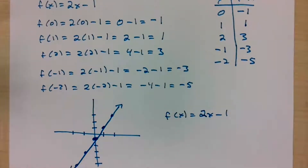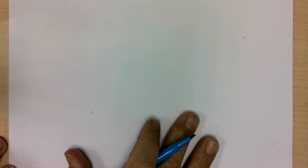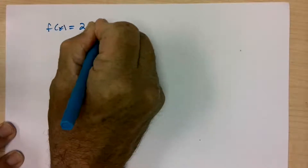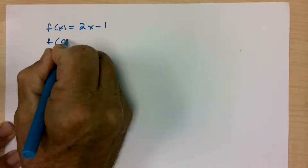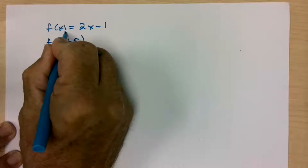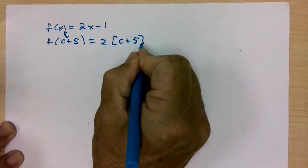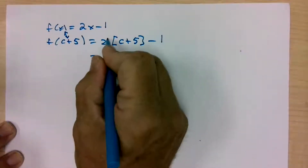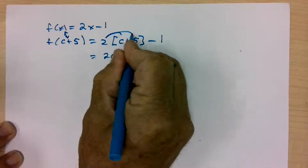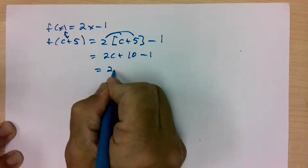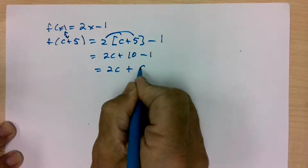You can plug other things into that function other than simply numbers. For example, with f of x equals 2x minus 1, if we want to know what f of c plus 5 is, we replace x with c plus 5 in parentheses: 2 times (c plus 5) minus 1. Using the distributive property: 2 times c is 2c, plus 2 times 5 is 10, minus 1, which gives 2c plus 9.